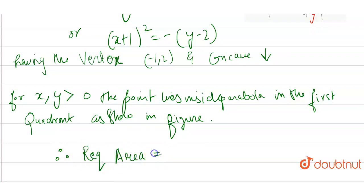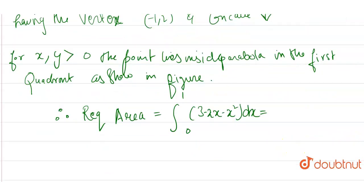Required area is equal to integration from 0 to 1 of (3 - 2x - x²)dx, which is going to be equal to 3x minus x² minus x³/3. Value has been given range between 0 to 1, which is equal to 5/3 square units. The required area is going to be 5/3 square units. Thank you.